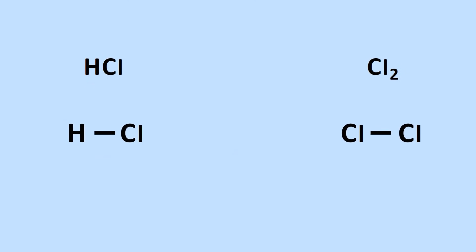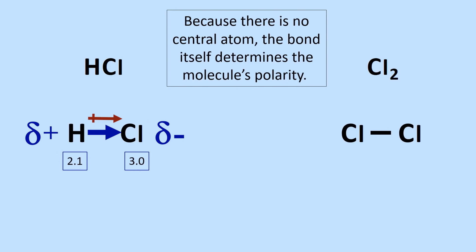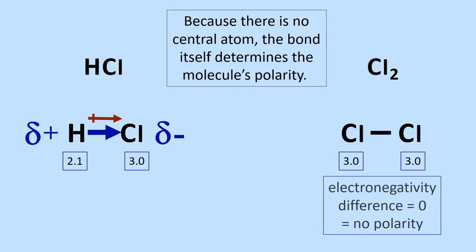Let's take a quick look at diatomic molecules, our examples being HCl and Cl2. Because there is no central atom, the bond itself determines the molecule's polarity. For HCl, the bond is polar, and so the molecule is polar. For Cl2, there is no bond polarity, and so the molecule is not polar.